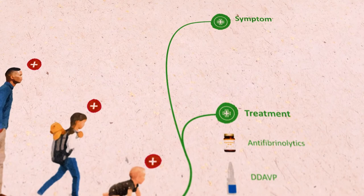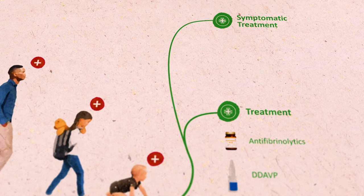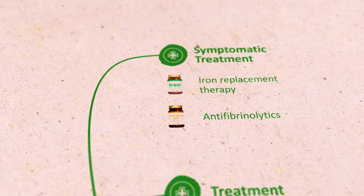Symptomatic treatment may already be started in first line even before a definite diagnosis is made, including iron replacement therapy, anti-fibrinolytics, and hormonal therapy.